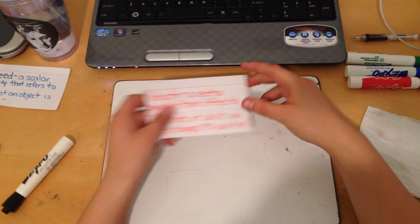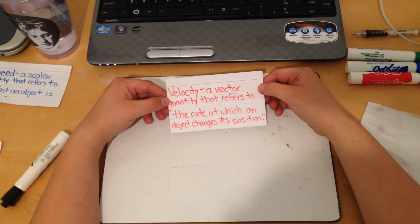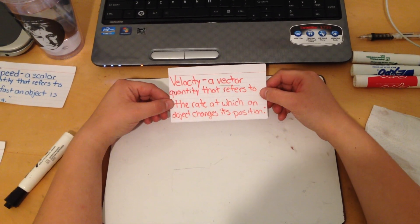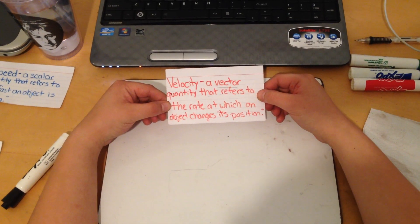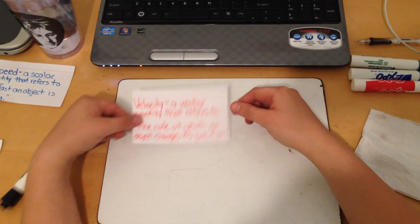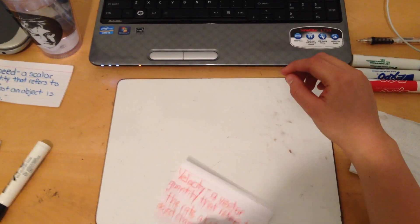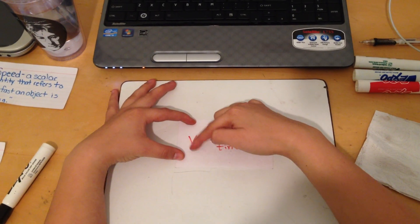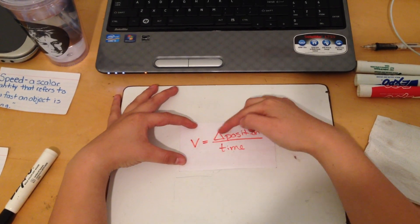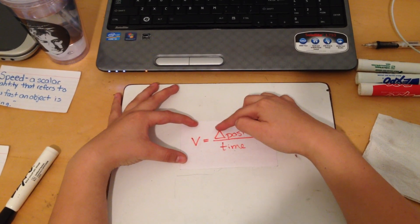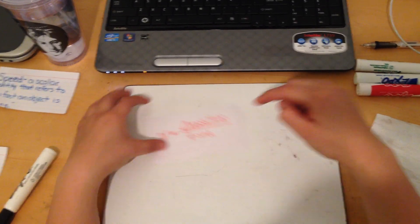Now we're going to go over velocity. Velocity is a vector quantity that refers to the rate at which one object changes its position. The formula for velocity is the change — that's what the triangle means — change in position divided by time.